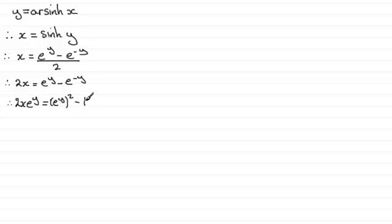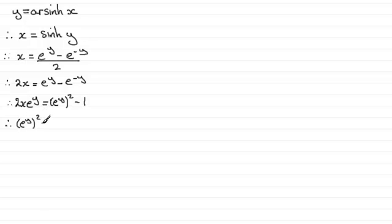Now we've got a quadratic here in e to the y. If I rearrange that by subtracting 2x e to the power y from each side, we're left with e to the y all squared minus 2x e to the power y minus 1 equals 0.